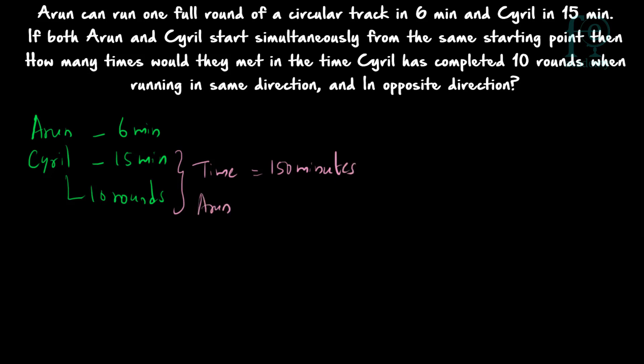Now, how many rounds will Arun complete within 150 minutes? Arun takes 6 minutes to complete 1 round, so Arun will complete 150 divided by 6, which equals 25 rounds within 150 minutes. So by the time Cyril completes 10 rounds, Arun will be completing 25 rounds.